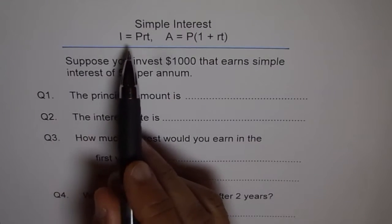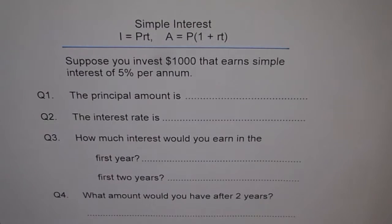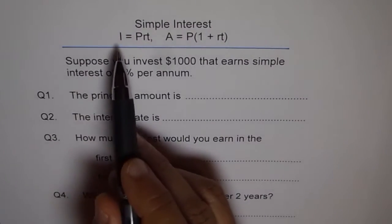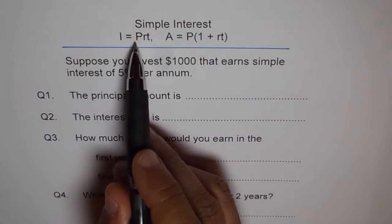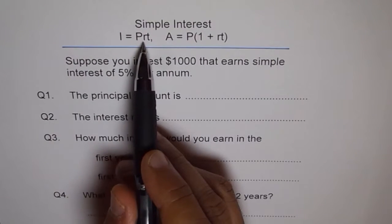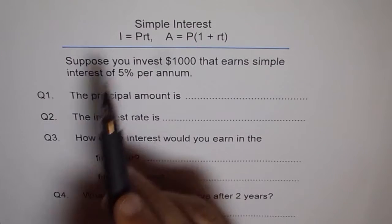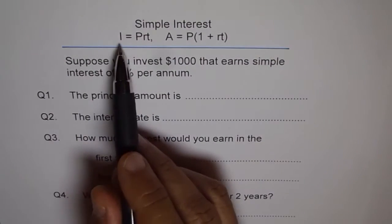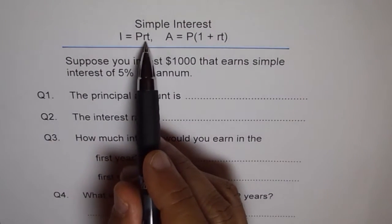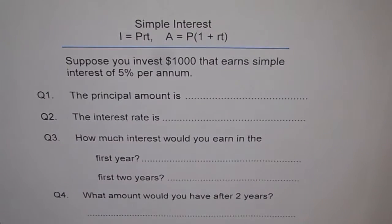Now simple interest - these are the two formulas we're going to use. First is the interest earned. Interest is earned based on the principal amount invested, rate of interest, and the time for which it is invested. It is P times R times T. More amount you invest, more interest you get. For more time you invest, more interest you get.